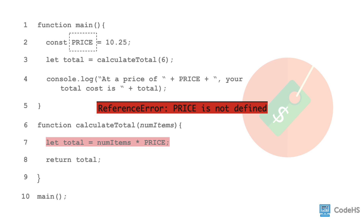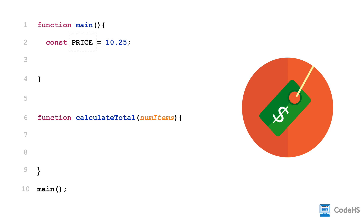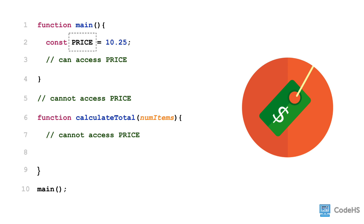When price was declared inside of the main function, the main function could use it, but the calculateTotal function was not able to access it. This is because price is what we call a local variable. A local variable is a variable that is created inside of a function. Its scope is the function in which it is created. So when we created the price variable inside of the main function, it can be accessed inside of the main function, but not inside the calculateTotal function, and not outside of any function.